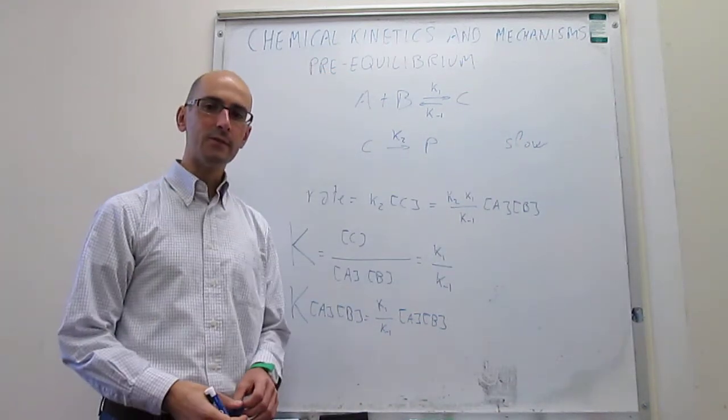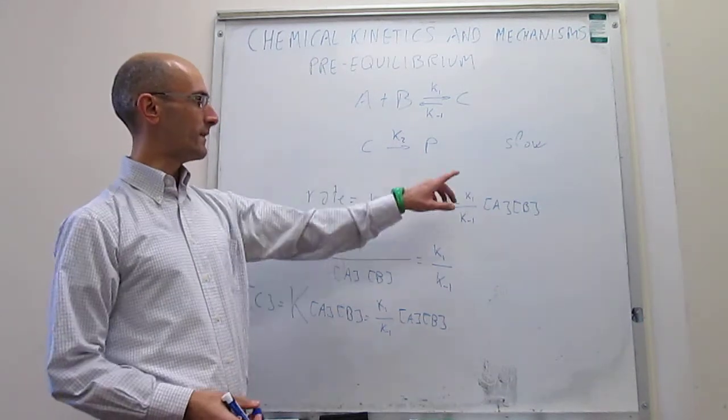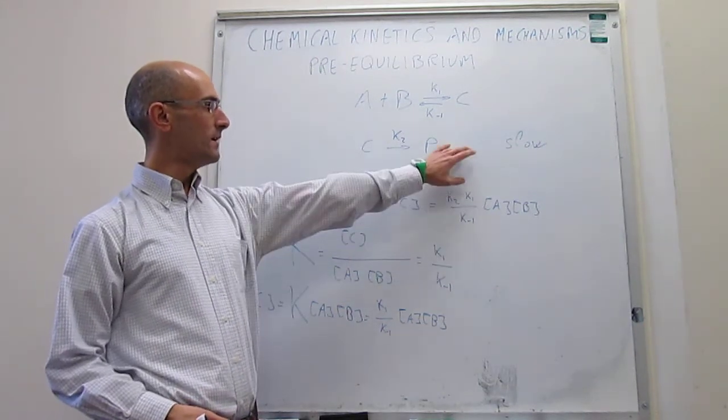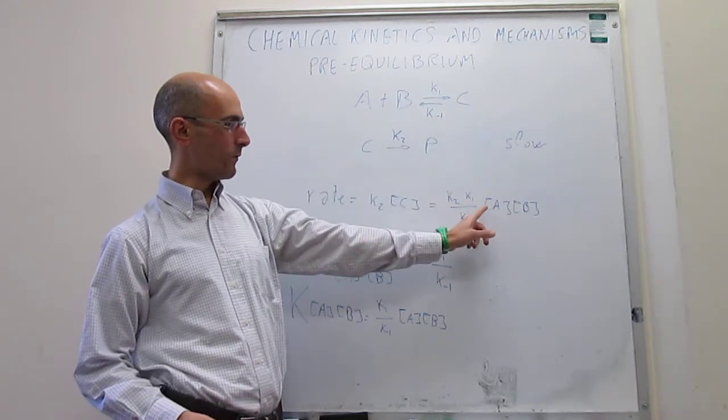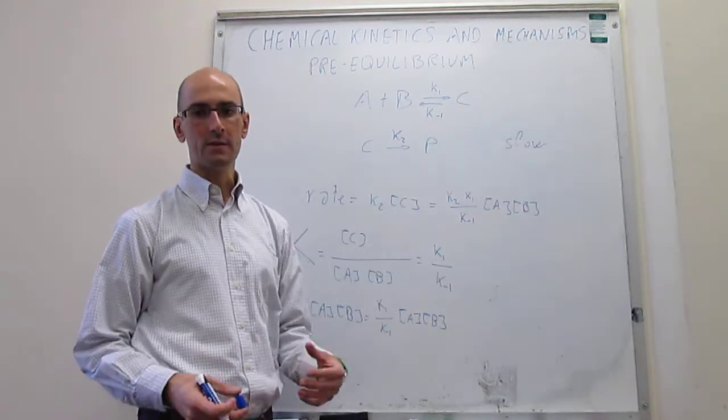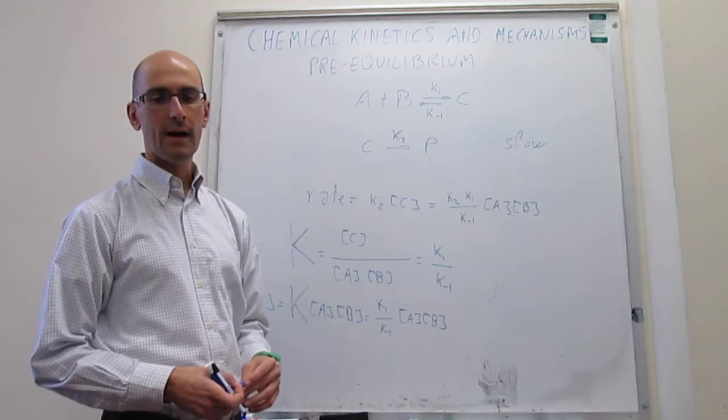Notice that there's a slight difference between the rate law for when the second step is slow, which is this one, and when the first step is the slow one, which will be simply K1 concentration of A concentration of B. That is the effect of having a pre-equilibrium.